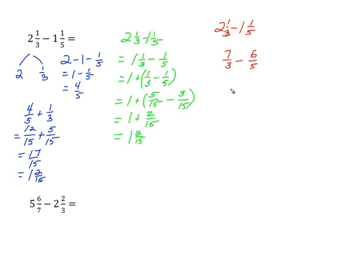We'll find our common units, which would once again be fifteenths. Five times seven is thirty-five, so seven-thirds is thirty-five-fifteenths. And three times six is eighteen, so six-fifths becomes eighteen-fifteenths. We find the difference and get seventeen-fifteenths, which we can decompose to one and two-fifteenths.